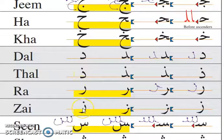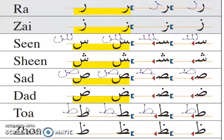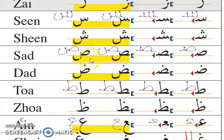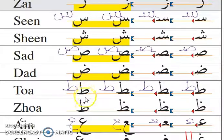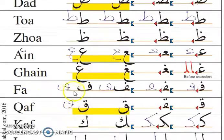Ra, Za, Sin, Shin, Saad, Zad, Ta, Dha, Ayn, Ghayn, Fa.